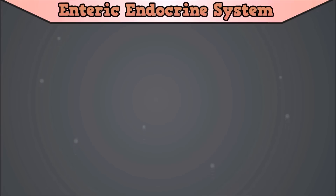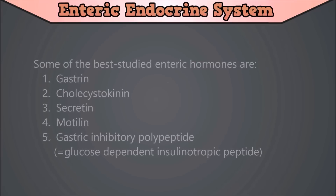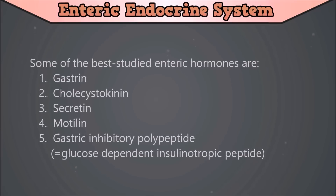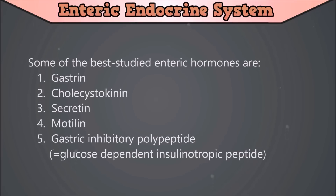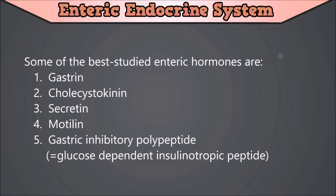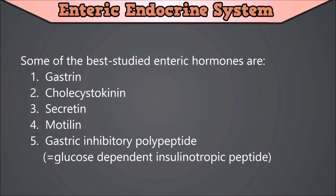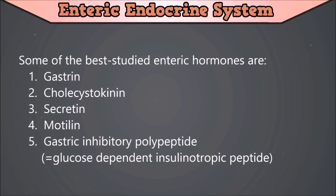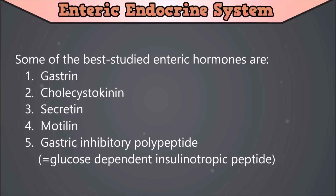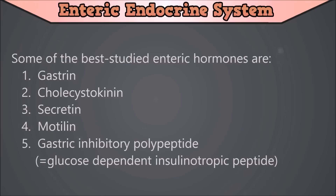Some of the best studied enteric hormones are gastrin, cholecystokinin, secretin, motilin, and gastric inhibitory polypeptide, which is also known as glucose-dependent insulinotropic peptide. These are the 5 hormones that will be discussed in this video.